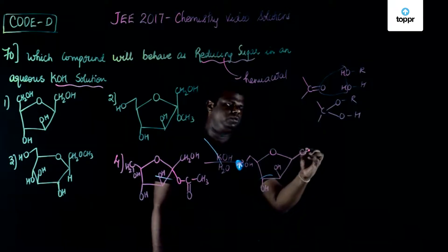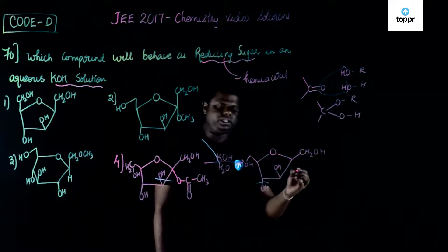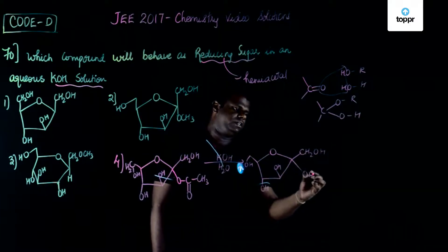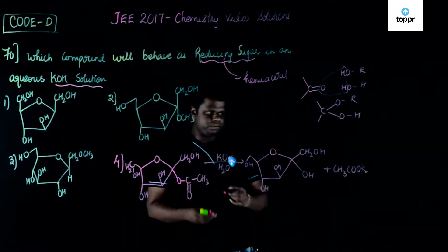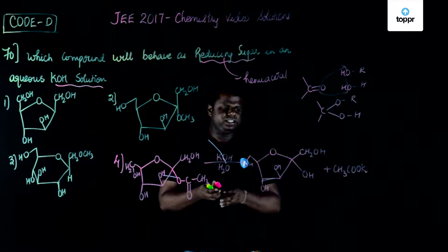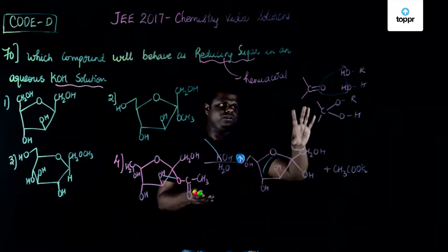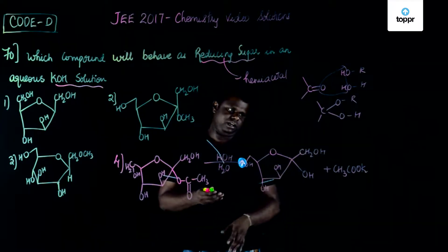There is CH2, CH2OH here and there is an OH here. There would be something like CH3COOK - potassium salt of carboxylic acid, very simple thing. If you could see this is nothing but a hemiacetal.